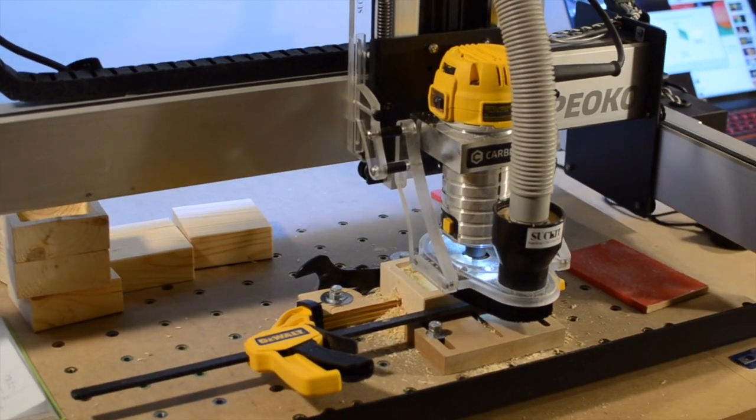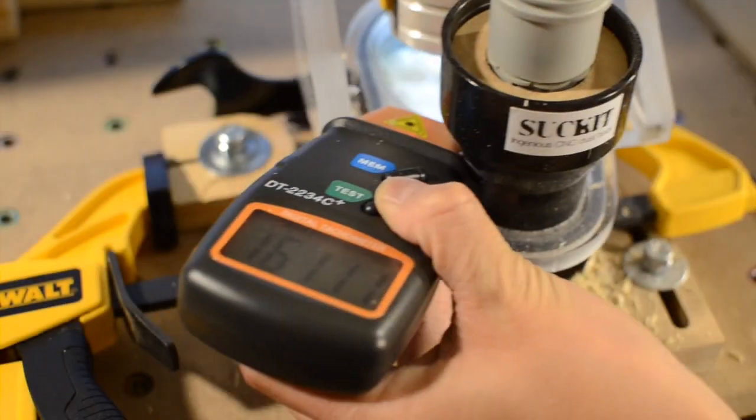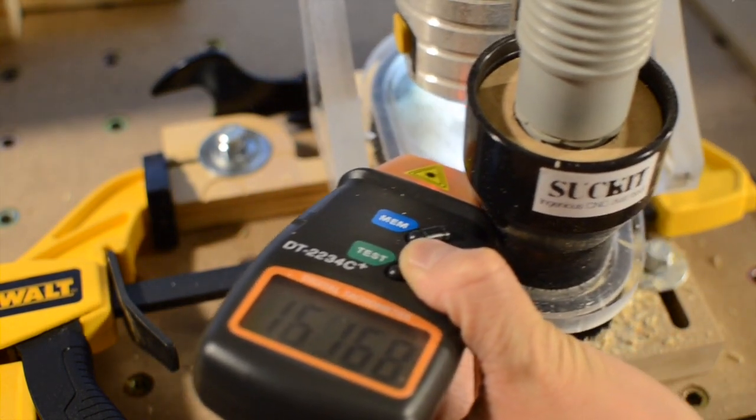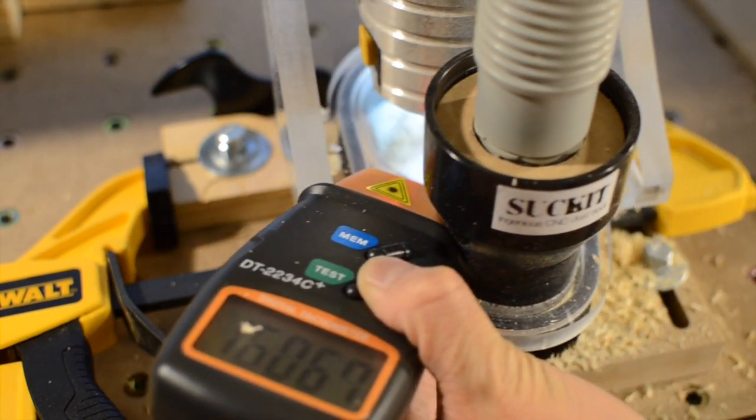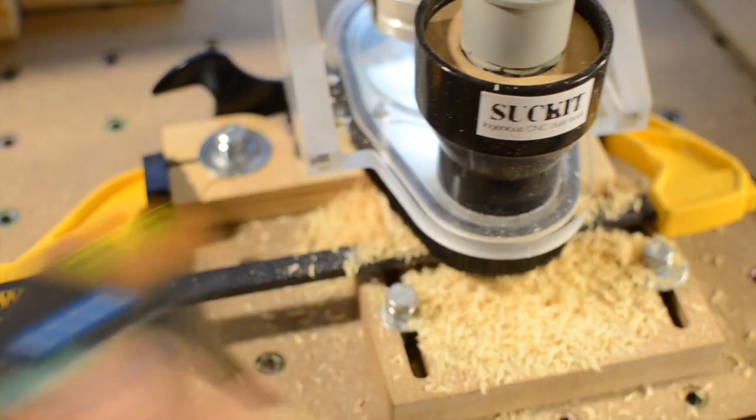Now, I need to head off any knowledgeable machinists before they complain. I do realize that the proper way to achieve a higher material removal rate at a constant RPM would be to cut deeper, not faster. That way the ratio of spindle speed to feed rate remains the same.